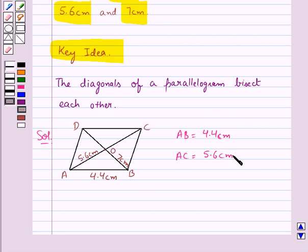Now since we know that the diagonals of a parallelogram bisect each other, so we have AO is equal to OC is equal to half of AC that is 5.6 upon 2 which would be equal to 2.8 cm.